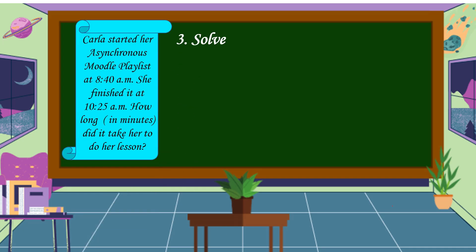We have already a plan, so let's carry out the plan. We're going to solve the problem: 10:25 minus 8:40. In subtracting time, we're going to start from right to left. This part here is for the minutes, and this part here is for the hours. The hours and minutes are separated by a colon. So, we're going to subtract from the minutes going to hours.